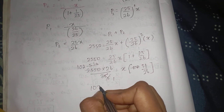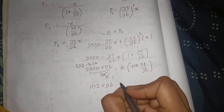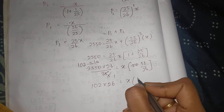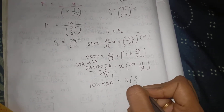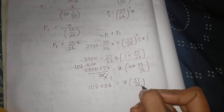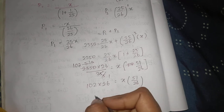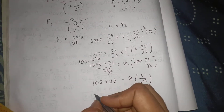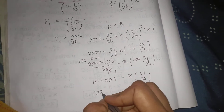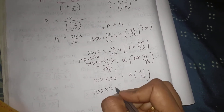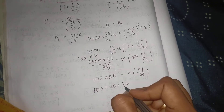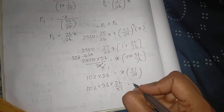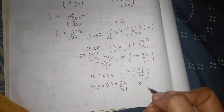So we have 102 × 26 = x × 51/26. Rearranging: x = 102 × 26 × 26 divided by 51.